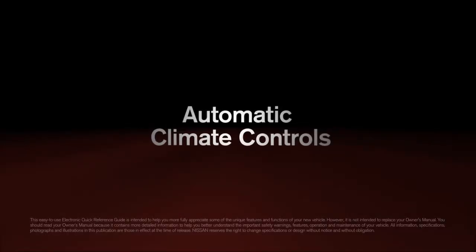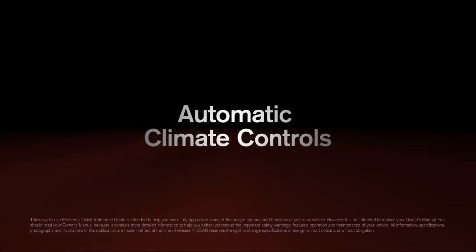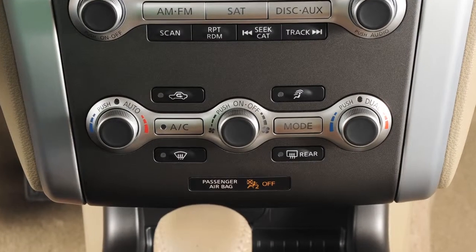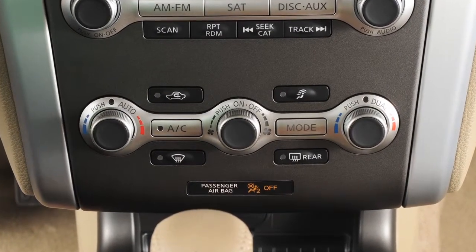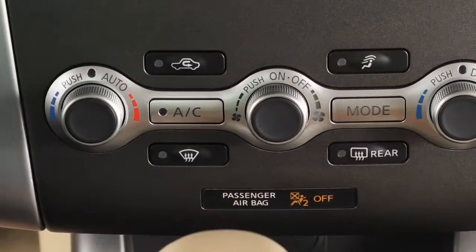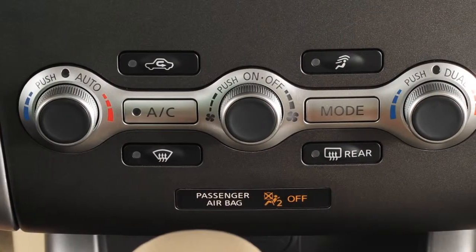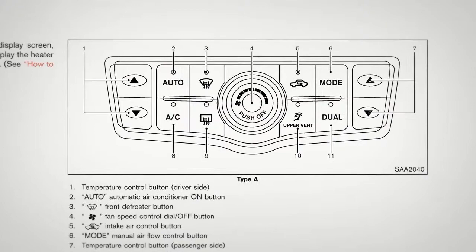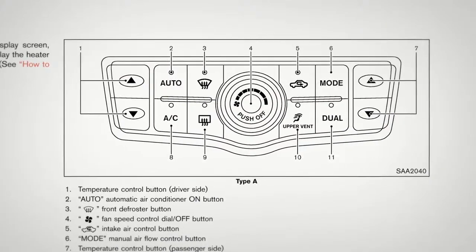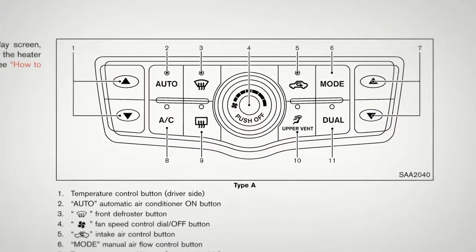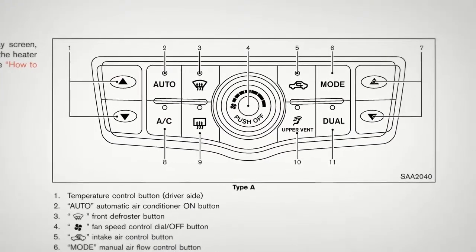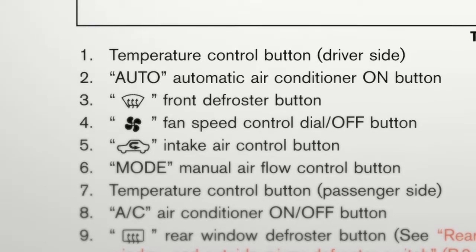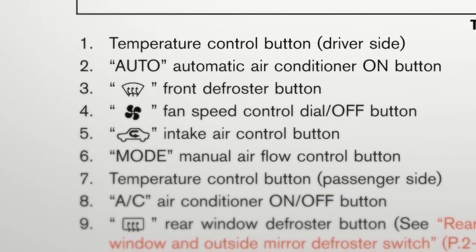Automatic Climate Controls. This is the panel you'll use to set the climate control system. It is made up of three multi-function controls and nine buttons. If your vehicle is equipped with this climate control system, the controls may differ but the functions are similar. Please see the owner's manual for more information on your climate control system.